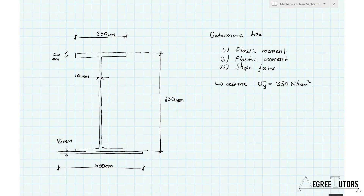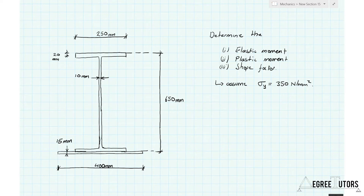In this worked example, we want to do a full analysis of a compound cross-section. We have an I-beam with a steel plate welded to the bottom, which is quite common. The things we're asked to find are the elastic moment, the fully plastic moment, and the shape factor. We can assume this is a high-strength steel with a yield strength of 350 newtons per millimeter squared.